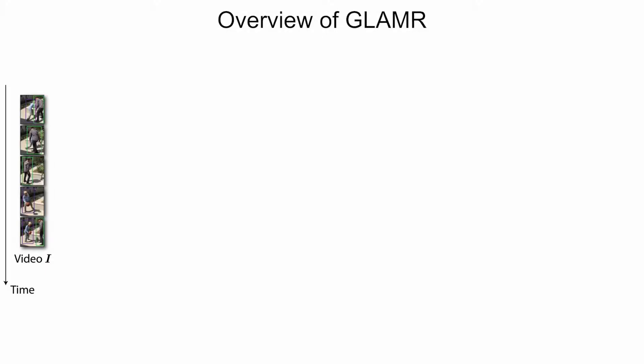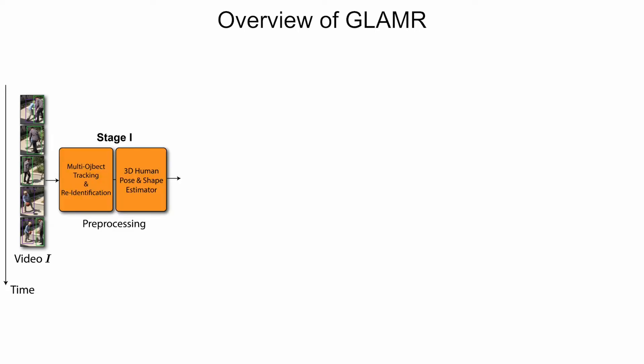Here is an overview of GLAMR. Given a video from dynamic cameras, we first use multi-object tracking and re-ID algorithms to obtain the bounding box sequence of each person in the video. We then apply a 3D human pose and shape estimator to obtain the motion of each person, which consists of the shape and 3D pose sequence in the camera coordinates.